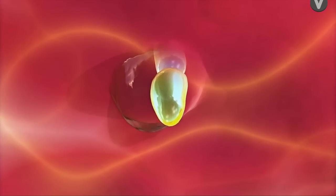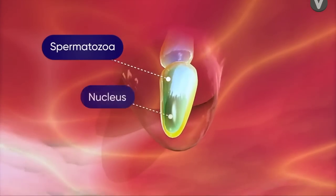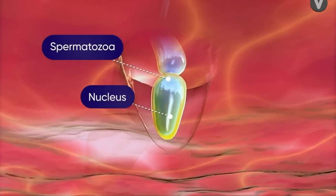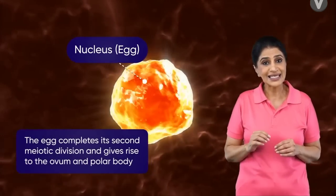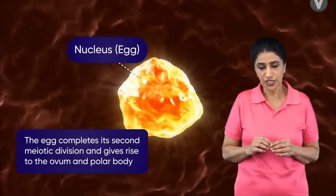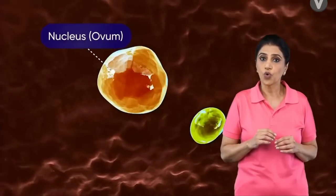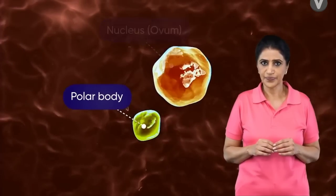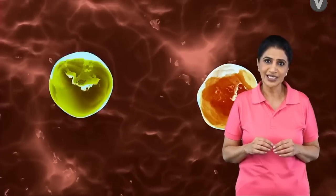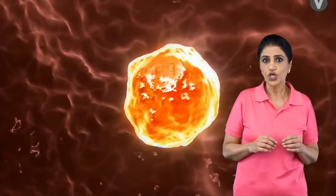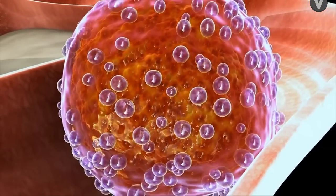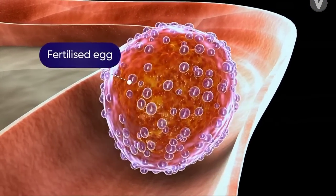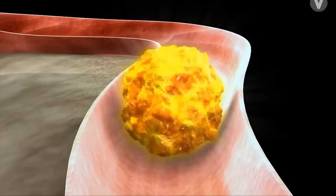Now, within this oocyte, we see the haploid nucleus of the spermatozoon along with the nucleus of the egg. Then the nucleus of the egg completes its second meiotic division, resulting in the formation of a mature ovum and polar body. This haploid nucleus fuses with the sperm nucleus to form a diploid nucleus. The fertilized egg is now termed a zygote.